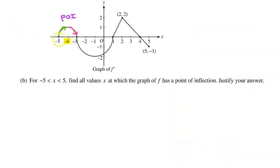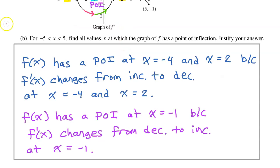Notice that f prime goes from increasing to decreasing at x equals negative 4, so that's a point of inflection. f has a point of inflection at x equals negative 1, because f prime changes from decreasing to increasing at x equals negative 1. Finally, notice that f prime goes from increasing to decreasing at x equals 2 — a third point of inflection. So f has points of inflection at x equals negative 4, x equals negative 1, and x equals 2.